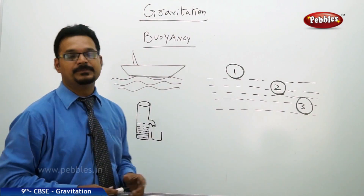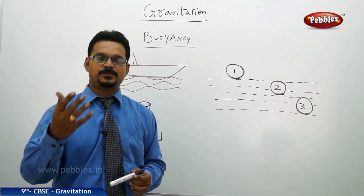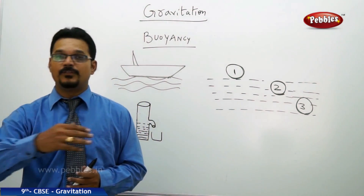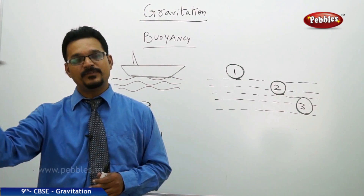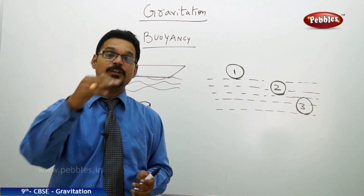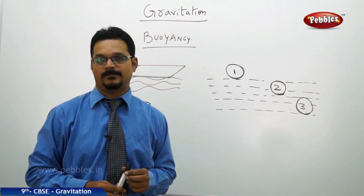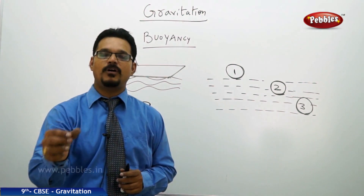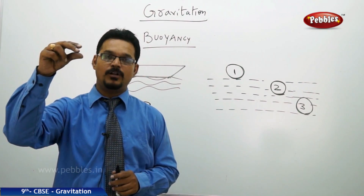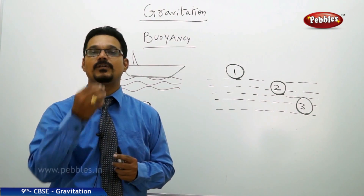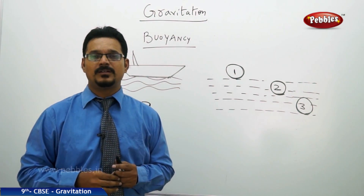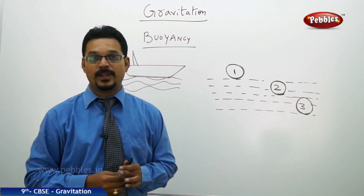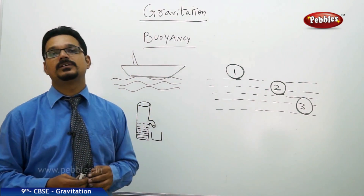The next concept is buoyancy. You know different types of ships on the sea water — from small boats to big ships with differences in weight. Whatever the weight, if it's a small ship or a big ship, they are floating on the water. Why are they not sinking? If you take a metal ball and drop it into water, it sinks, but ships don't sink. They're floating.